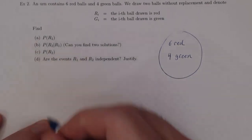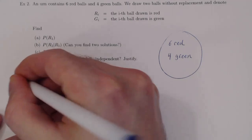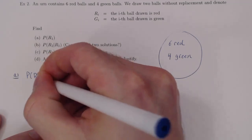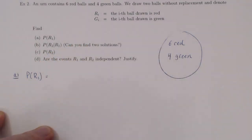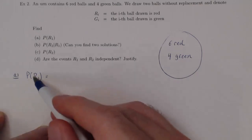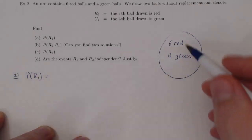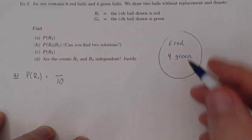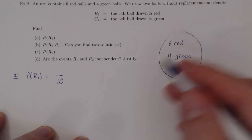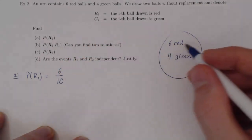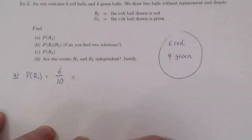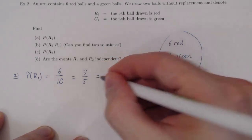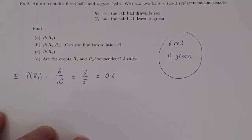We're looking at part A first. We're asking P(R1) — the probability of selecting a red ball on the first pick. Well, there are ten balls in total, and out of those ten balls, six are red. So it's six chances out of ten. You can cancel a factor of two and you're left with three over five, or 0.6. And that's P(R1).